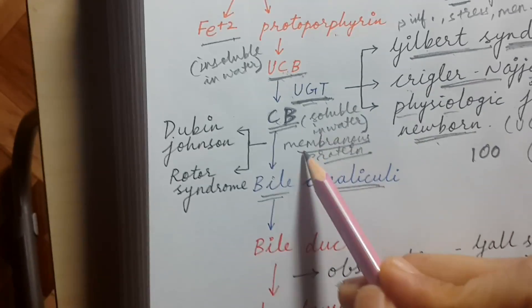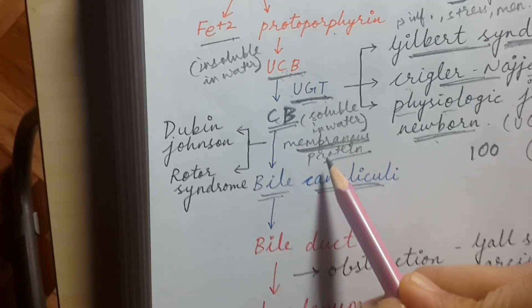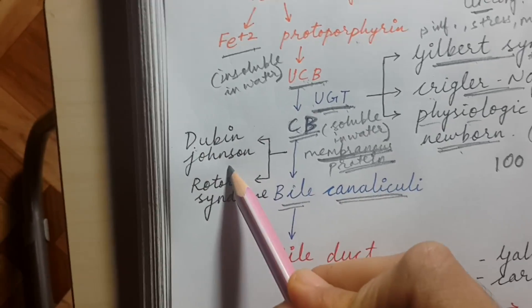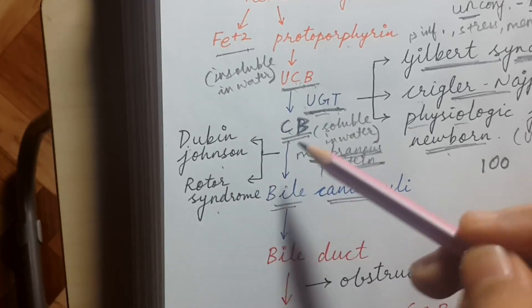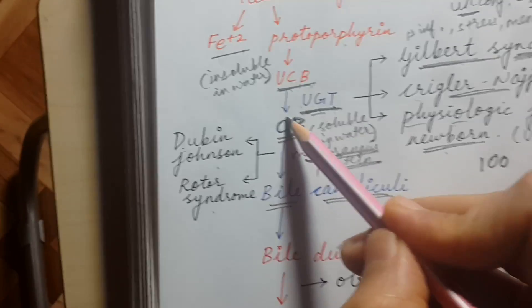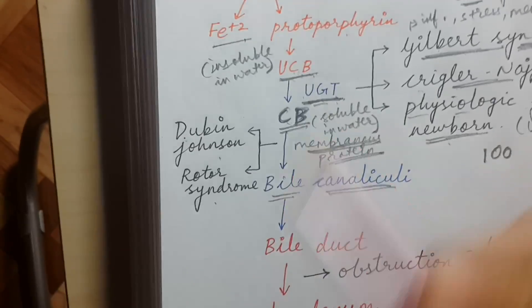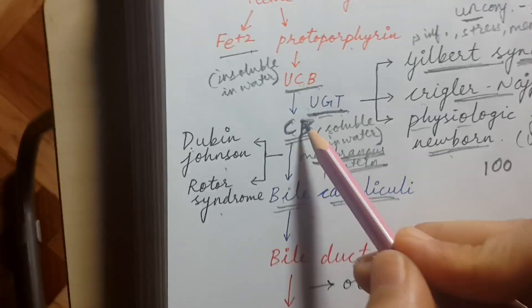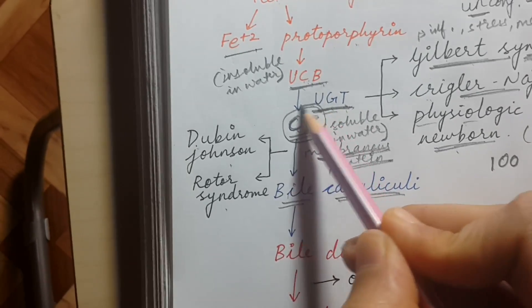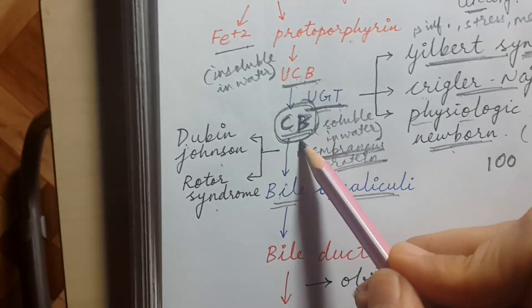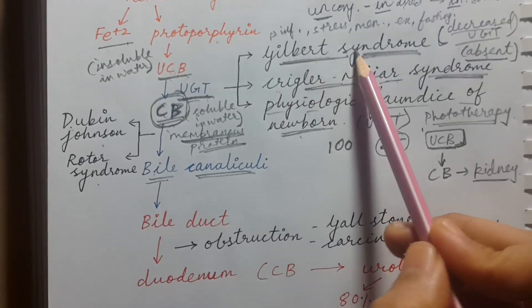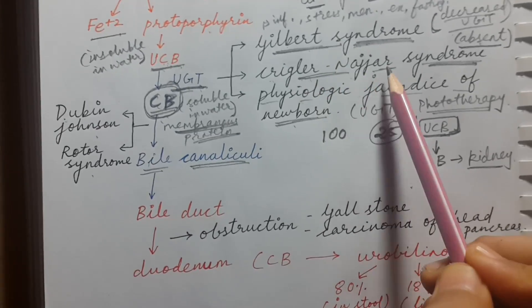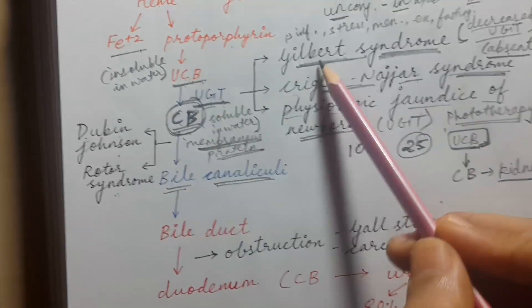The two classic causes showing a problem with the membranous transport protein are Dubin-Johnson syndrome and Rotor syndrome. In both, the body cannot transport conjugated bilirubin from the hepatocyte into the bile canaliculi, causing a buildup of conjugated bilirubin that eventually enters the blood. All congenital causes of jaundice — Gilbert, Crigler-Najjar, Dubin-Johnson, and Rotor syndrome — are autosomal recessive.